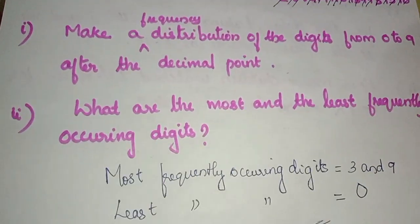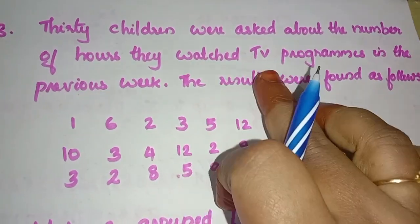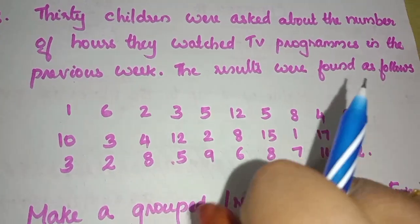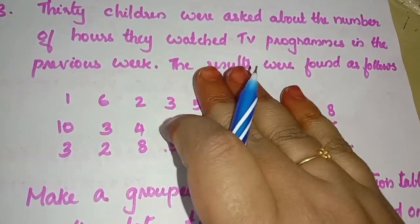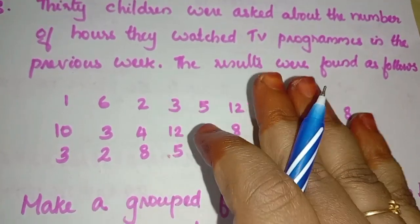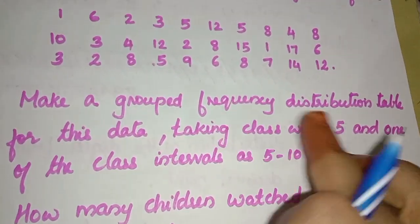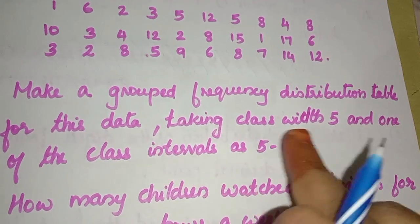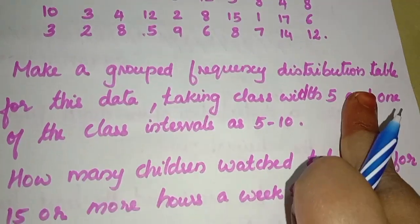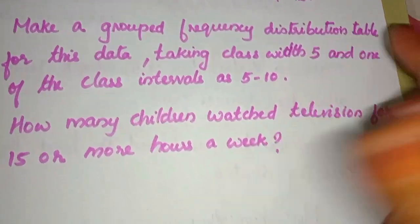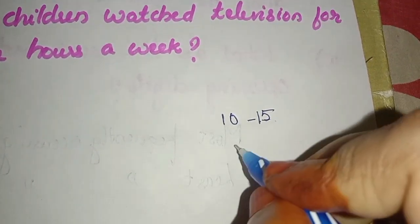Let's finish the first question. Now let's go to our next question. 30 children were asked about the number of hours they watched TV programs in the previous week. The results were found as follows. Make a Grouped Frequency Distribution Table for this data taking class width 5 and one of the class intervals as 5 to 10. We have class intervals 5 to 10, 10 to 15, and 15 to 20.